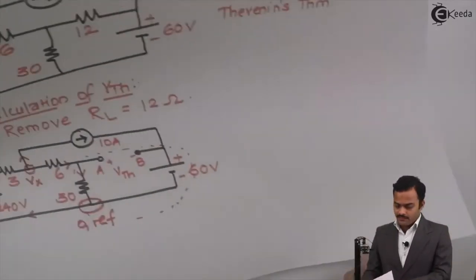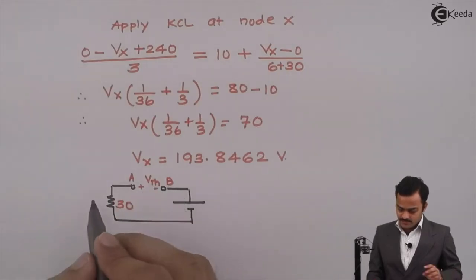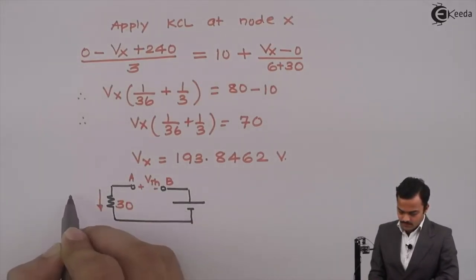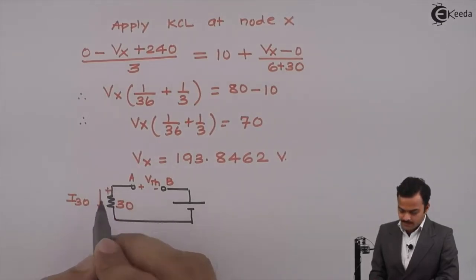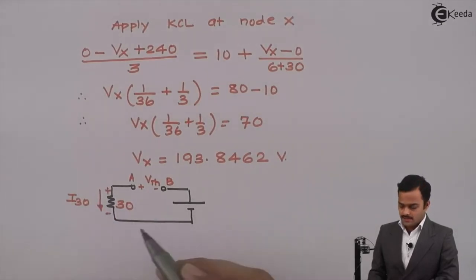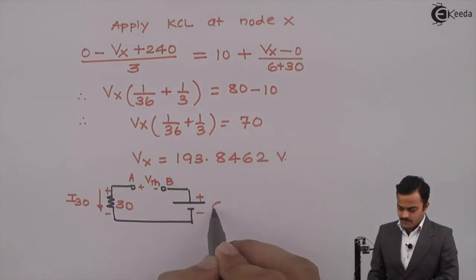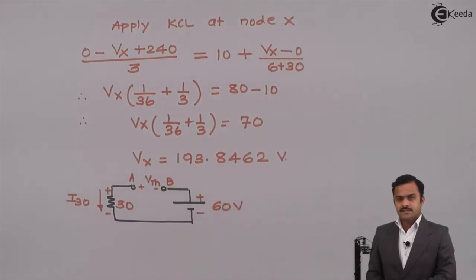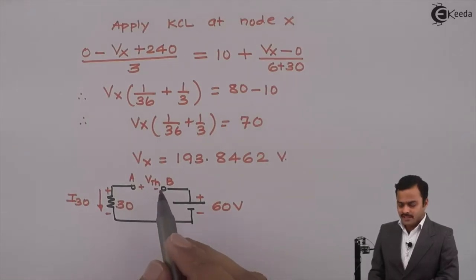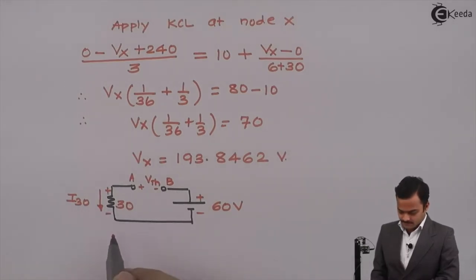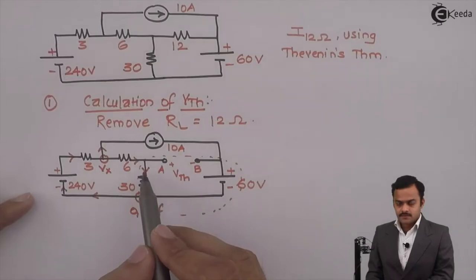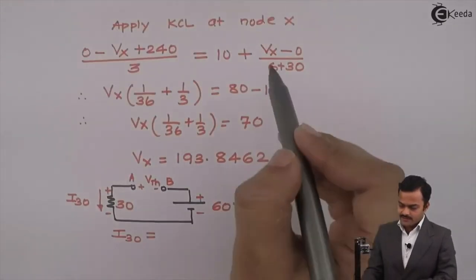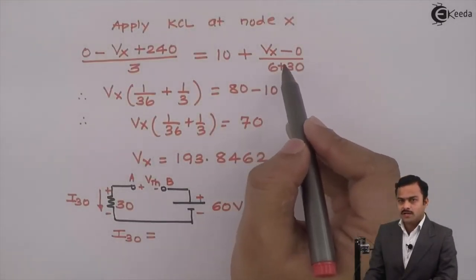Current flowing through it is in downward direction, it is I30. Because of this, polarity developed is like this plus minus and obviously, it is given a fixed voltage 60 volt. Now, in order to get VTH, I should know what is I30.